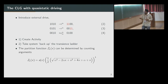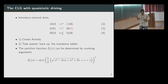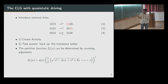The partition function can be determined just by counting arguments, because at every step of the transient ladder, if you know the number of states at that rung, all of them are equiprobable, and each rung comes with a weight of alpha — alpha, alpha squared, alpha cubed, and so on. You can just count, and for any drive alpha you can determine the partition function. A(x) is some factor depending on boundary conditions, and the leading part is this expression.